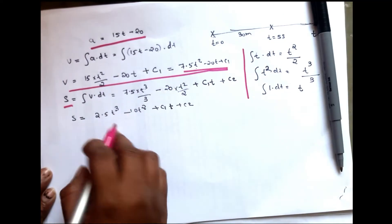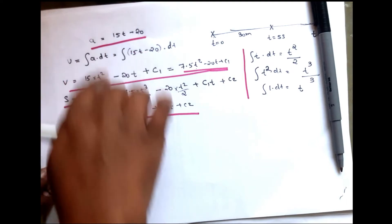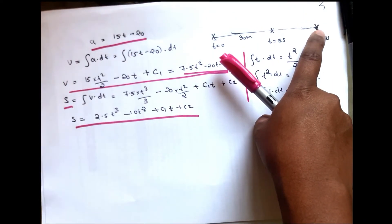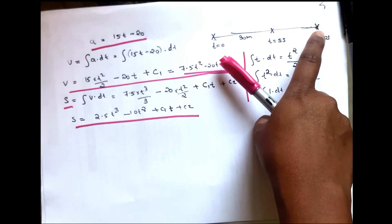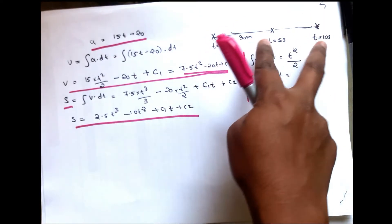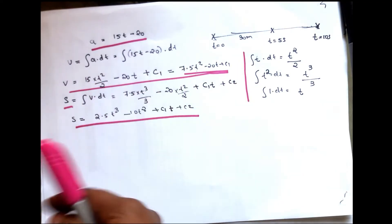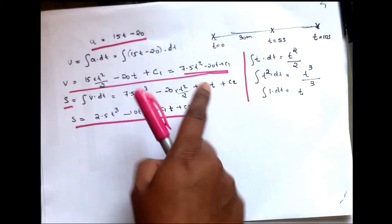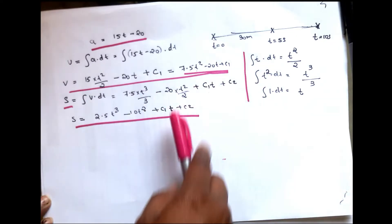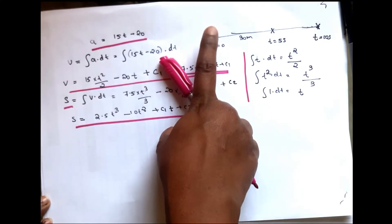Now we solve the equations using boundary conditions. We have a displacement equation, and we know that at t = 5 seconds, the displacement is 30 meters. Also, at t = 0, we can apply initial conditions.